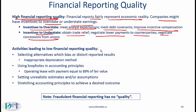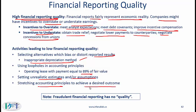Activities leading to low financial reporting quality include: selecting alternatives which bias or distort reported results — for example, using an inappropriate depreciation method such as units of production when straight-line is appropriate. Also, using loopholes in accounting principles — for example, under US GAAP a lease should be a capital lease if payments are 90% of fair value, but structuring it at 89% to keep it as an operating lease. Setting unrealistic estimates, such as an unreasonably long depreciation life to reduce costs, and stretching accounting principles to achieve desired outcomes.